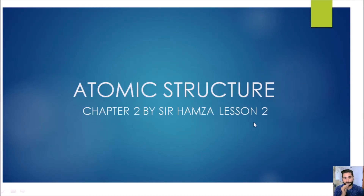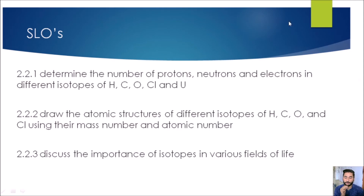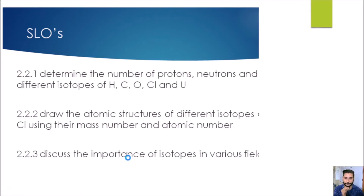Welcome to lesson 2 of atomic structure. In this lesson, we'll be looking at SLOs 2.2.1 till 2.2.3. We'll be looking at different isotopes of hydrogen, carbon, oxygen, chlorine, and uranium. We'll be looking at how to draw the atomic structures of these isotopes, and we'll be looking at the importance of these isotopes in our daily life.